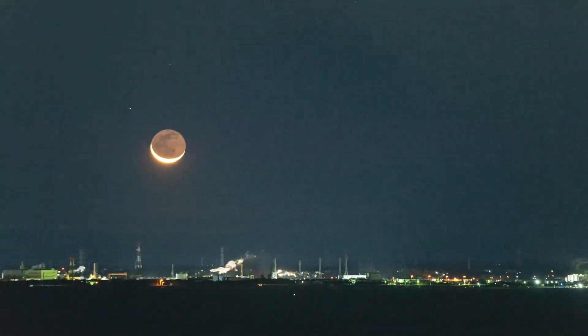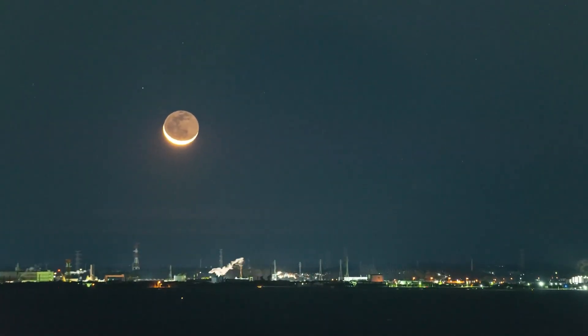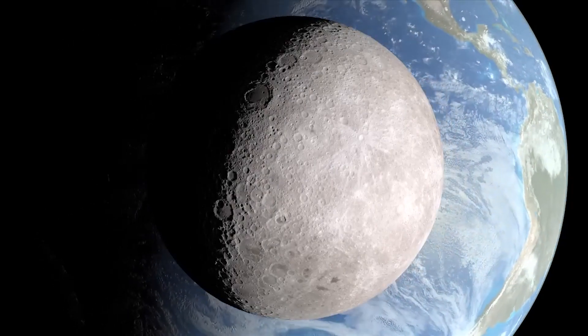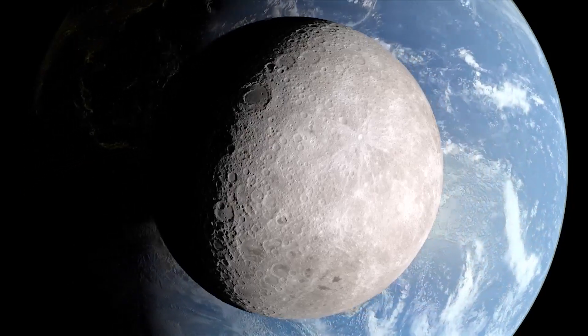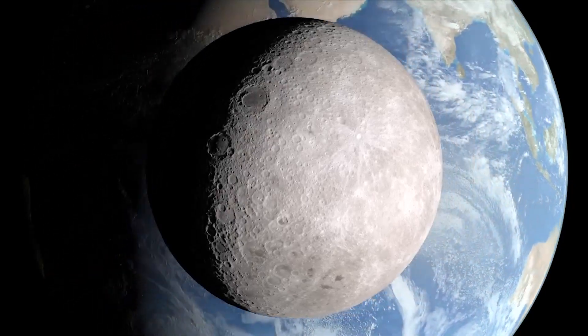The Moon also helps stabilize Earth's axial tilt, which is responsible for our seasons. Without the Moon's steadying influence, computer models suggest Earth's tilt could vary chaotically, potentially causing extreme climate shifts. While this instability would take millions of years to develop, it highlights how integral the Moon is to conditions on Earth.